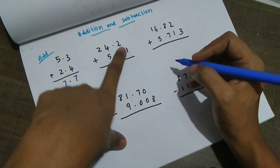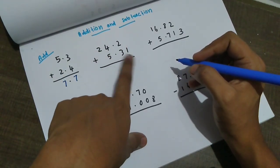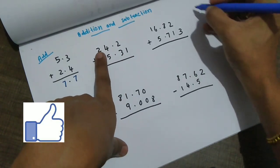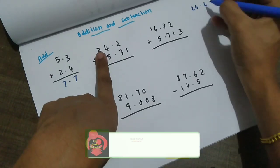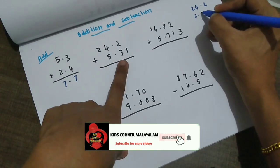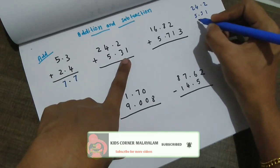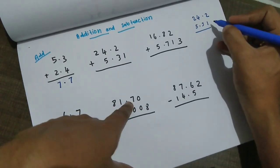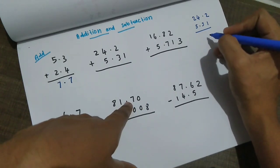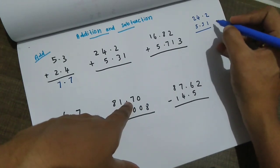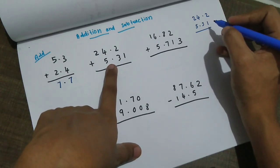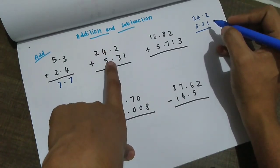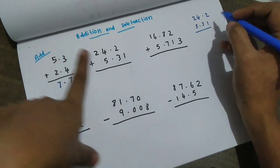Next number: 24.2 plus 5.31. We will add these numbers. We write 24.2 and 5.31. Now there is a confusion here — we must align the decimal points. The decimal point of the first number and the second number must be in the same position.